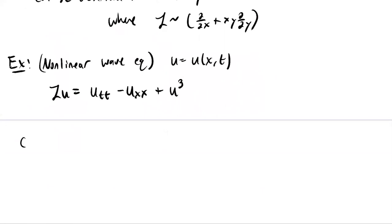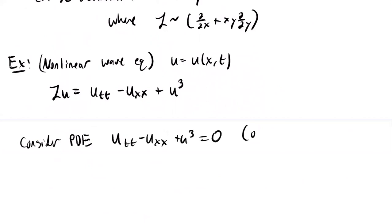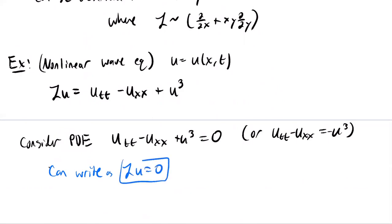If I look at the PDE: U_tt minus U_xx equals U minus U cubed, I can write this more compactly as L(U) equals zero. This equation is a version of the wave equation, but it's more complicated because I've added a cubic term. Why is this called nonlinear? We'll go over that in a second.